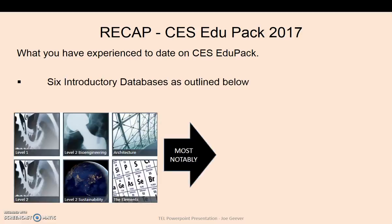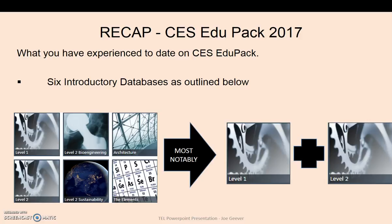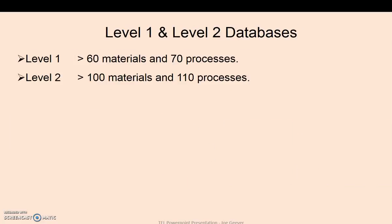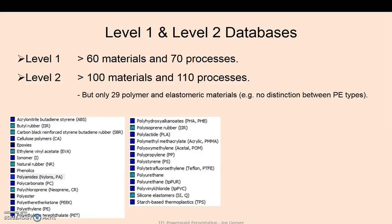So what's happened to date? Well, what you've been used to date is 6 introductory databases, mainly Level 1 and Level 2. What was available? Level 1: 60 materials, 70 processes. Level 2: 100 materials and 110 processes.